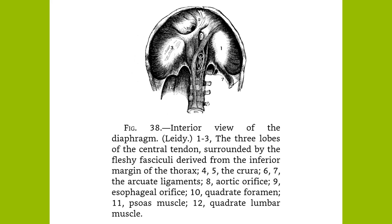Hiccough is a spasm of the diaphragm. The arteries of the chest are the intercostal branches of the subclavian and the thoracic aorta, the phrenic, mediastinal, and intercostal branches of the internal mammary, and the thoracic branches of the axillary. The nerves are intercostal and phrenic.